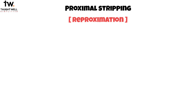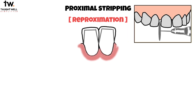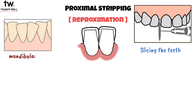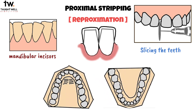Proximal stripping, also known as reproximation, is a method used to create space by selectively reducing the width of certain teeth. It's like slicing the teeth to make room. Usually, the mandibular incisors are the ones that undergo proximal stripping. However, it can also be done on the maxillary front teeth and premolars in both arches to create space.